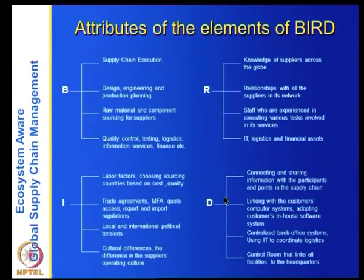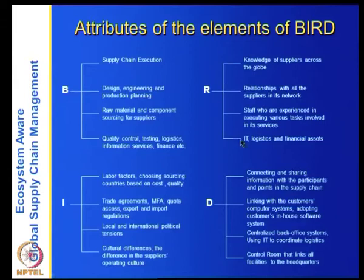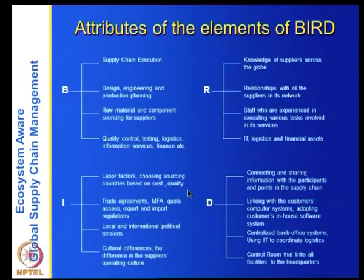The delivery mechanisms involve connecting and scanning information with participants and points in the supply chain, linking with customer computer systems, adopting customers' in-house software systems, centralized back office systems, and using IT to coordinate logistics — a control room that links all facilities to headquarters. This delivery mechanism is what makes the approach and execution possible. BIRD stands for Business functions, Institutions as constraints, Resources, and Delivery mechanisms.